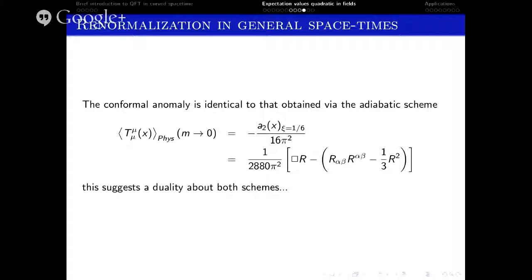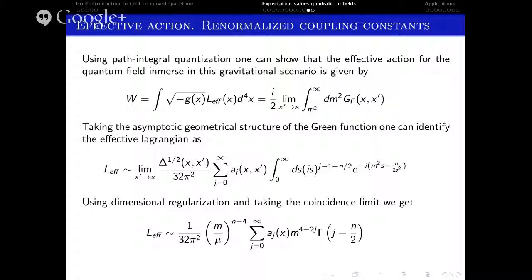Up to now we have only discussed how to obtain finite quantities from formally divergent ones. It is necessary to place these formal divergent contributions somewhere else in our theory. We can manage this by working with the Lagrangian formalism. Using path integral quantization, it is possible to show that the effective action for the quantum field in this gravitational background can be written in terms of the Green's function, as shown in the first equation. As ultraviolet divergences are common to every quantum field theory, we can consider the asymptotic adiabatic structure of the Green's function using the DeWitt-Schwinger formalism, and obtain the Lagrangian expressed as shown.